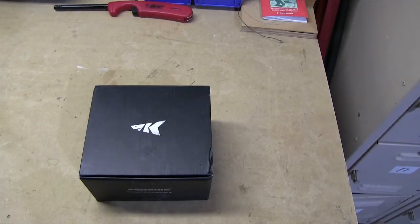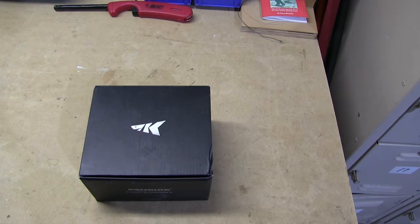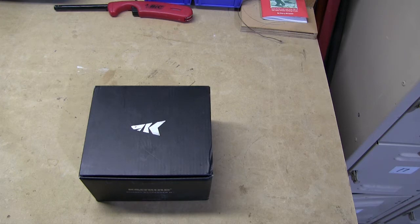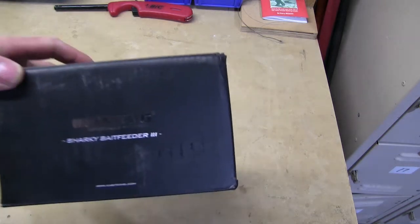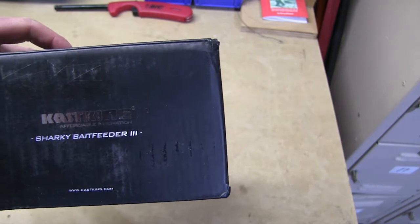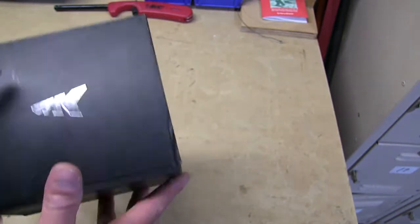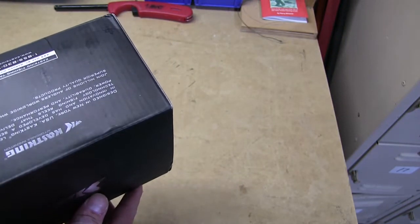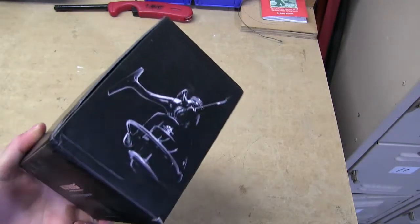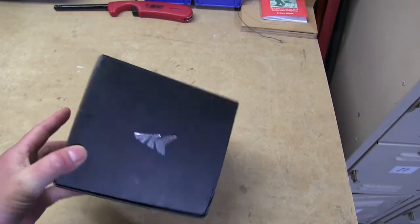All right, today we're going to be giving you an unboxing and quick review of a new bait feeder spinning reel that we picked up for carp fishing. It is a Cast King Sharky Bait Feeder 3, size 5000, so it's one of the bigger ones. Let's get it opened up and take a look at it.